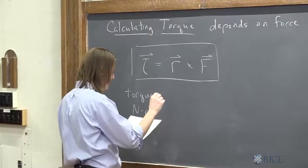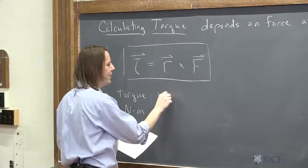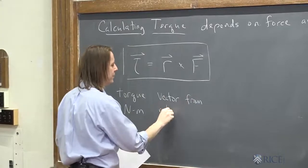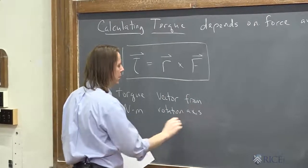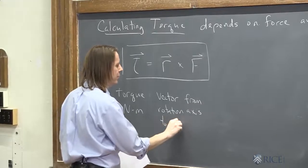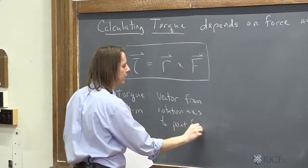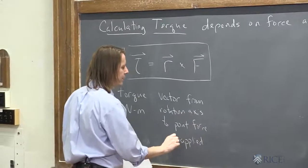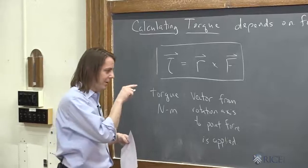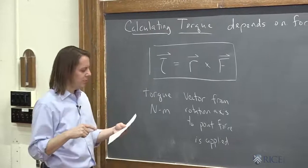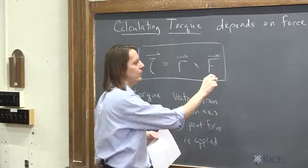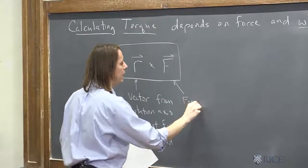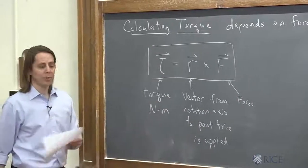Or this is the vector. This is the one you've got to get good at finding. Vector from the rotation axis to the point the force is applied. Not necessarily a radius. It's just a displacement from the axis to where the force is applied. And then this, of course, is just the force. And the force is a vector. So that's the three components.